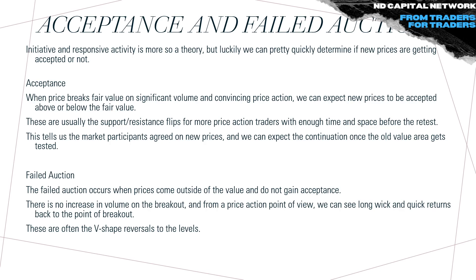Acceptance and failed auction — while initiative and responsive activity is more theoretical, we can quickly determine if new prices are getting accepted. Acceptance is when price breaks outside value on significant volume and convincing price action — we can expect new prices to be accepted above or below that value. This is essentially a support-resistance flip. If sufficient time and space pass before a retest, this tells us market participants agreed to new prices and we can expect continuation once the old value area is tested. A failed auction occurs when prices come outside of value but don't gain acceptance — there's no increase in volume on the breakout, and from a price action perspective we see a long wick and a return back to the breakout point — a V-shape reversal.